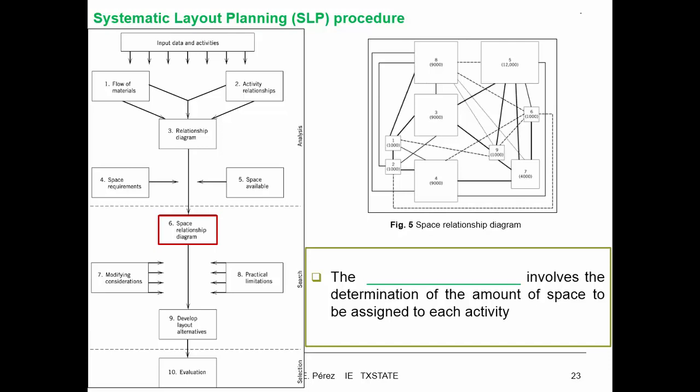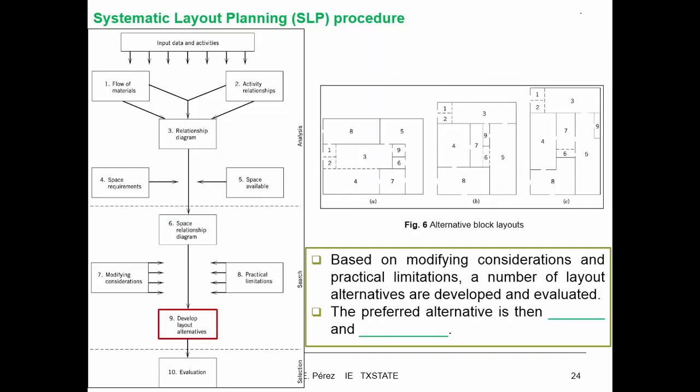The space relationship diagram shows the size and the connection between each department. It involves the determination of the amount of space to be assigned to each activity, transitioning from nodes to boxes and the actual size of those departments. Based on modifying considerations and practical limitations, a number of layout alternatives are developed and evaluated, and the preferred alternative is then identified and recommended.